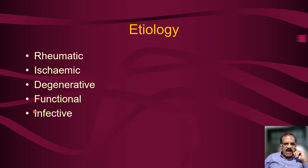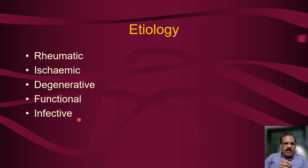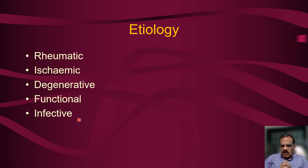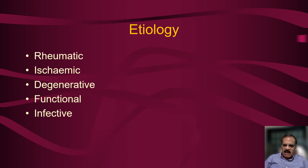Infective endocarditis is a relatively common cause we will discuss in a separate lecture. In infective endocarditis there may be damage to the mitral valve and regurgitation can result. So there are a number of etiologies of mitral regurgitation, but by default it would be rheumatic etiology.